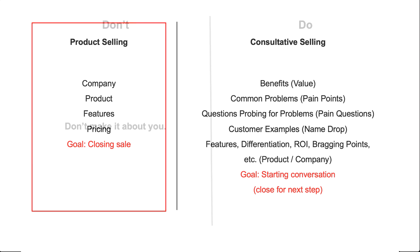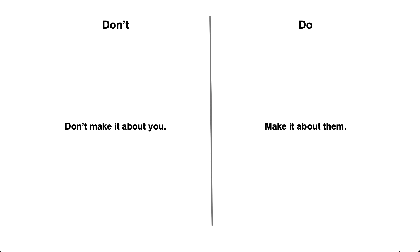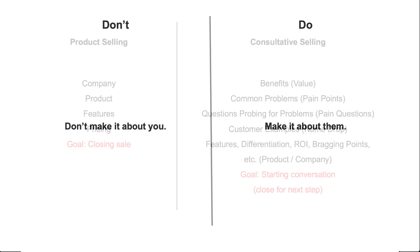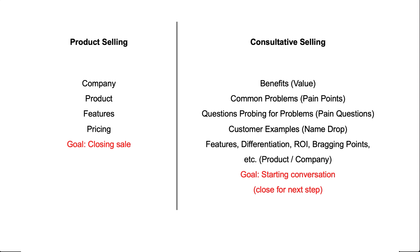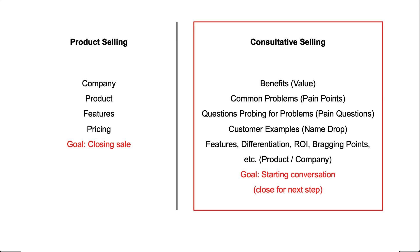Instead of making it all about you, make your message all about the prospect. The easiest way to do that is to use the consultative selling approach — you'll talk about improvements they might be interested in, pain points they might have, ask them questions, and share examples. It becomes a more 'all about them' approach. I'm going to show you some email templates that apply this.